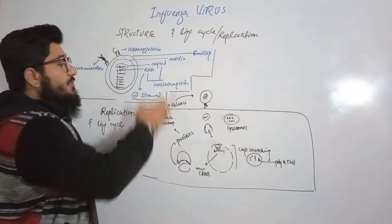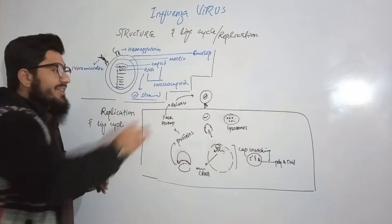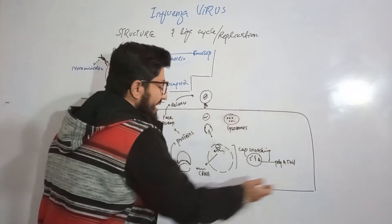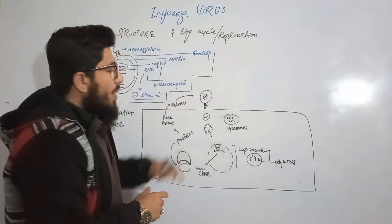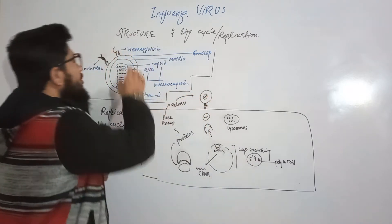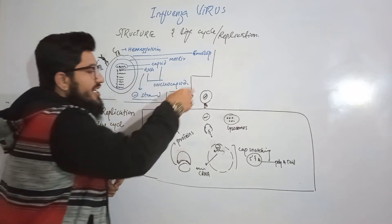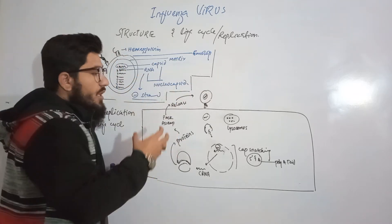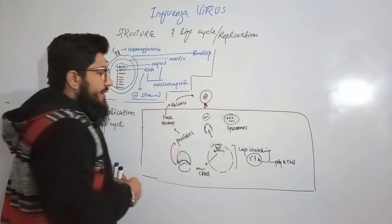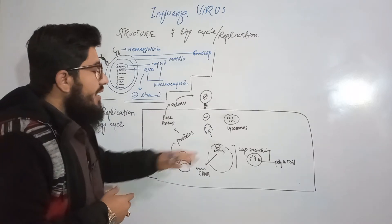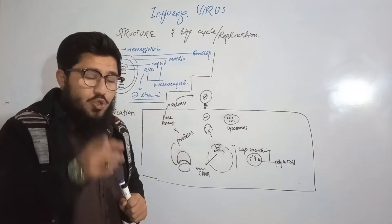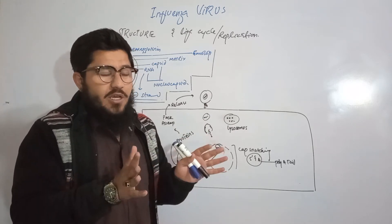Consider that the influenza virus reaches your respiratory tract and finds a specific receptor on a host cell. The virus uses its hemagglutinin to attach to that receptor. After attachment, the virus is endocytosed — it enters the cell by endocytosis. Once inside the cell, the lysosomes are waiting for this virus.